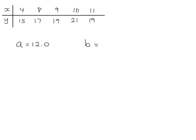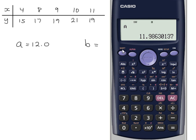We need the value of b. So if we go through all that again, shift, 1, 7, value of b, option 2. Make sure you press equals because that's not the value of b. 0.740.